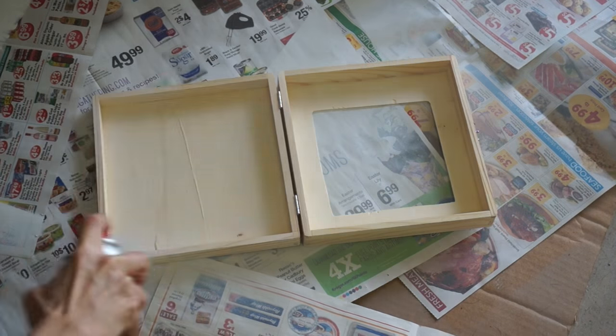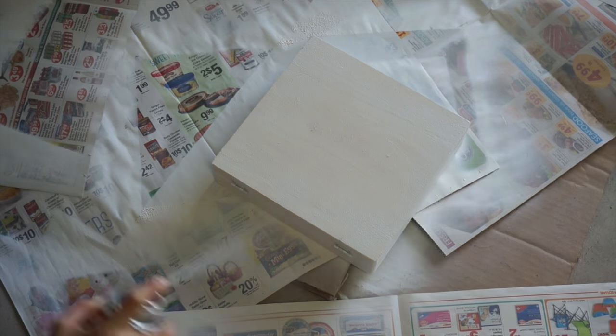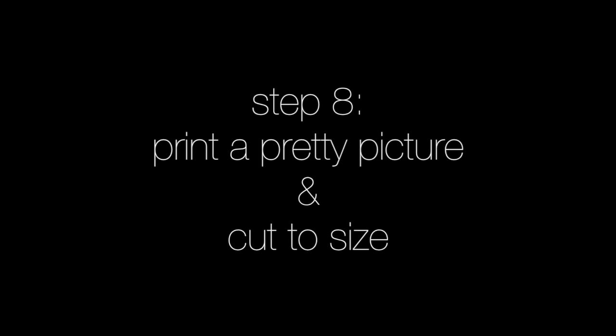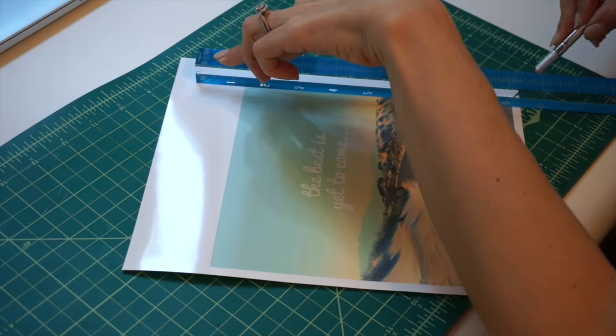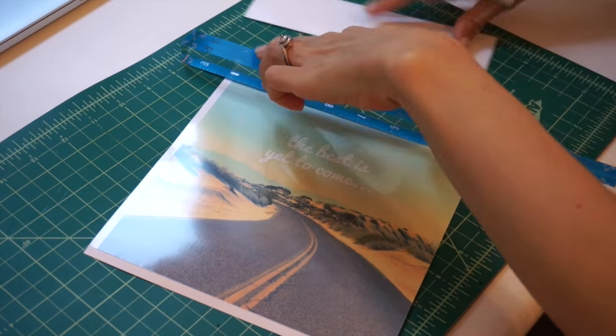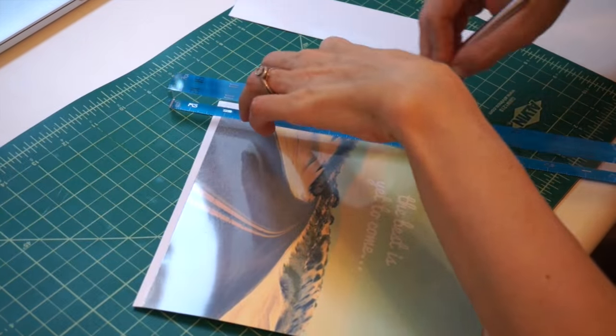Next I went ahead and spray-painted the entire box white, and I found a cool picture on an Etsy shop. I'm going to link it below. It costs five dollars, I think, to download the JPEG, and then I just sent it to Walgreens directly online so that they could print it out on an 8x10 piece of paper.